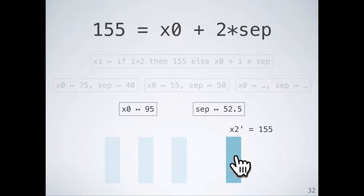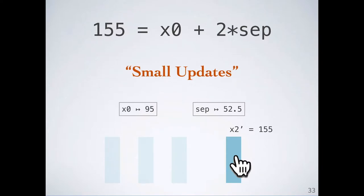Our remaining options are to change a single number in the program, either x0 or sep. We call changes to only a single number small updates. And because they are intuitive, such small updates are the only kind of changes our live synchronization will make.